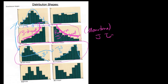Last but not least, we have bimodal. Remember, mode means the class with the most frequency. When this class here ties with another class over there — two winning classes — we say it is bimodal. You can even have a tri-modal distribution.